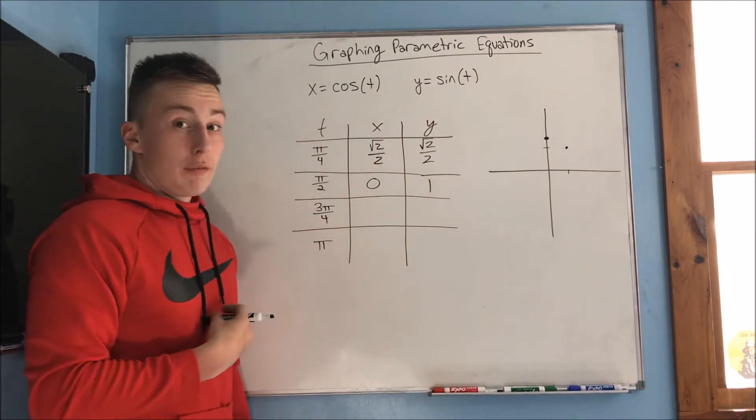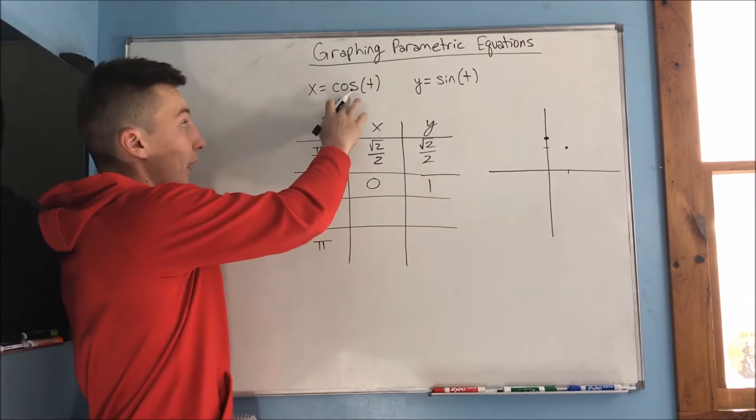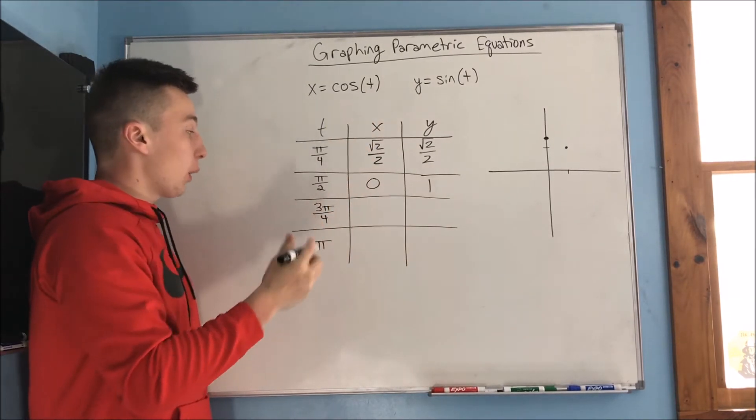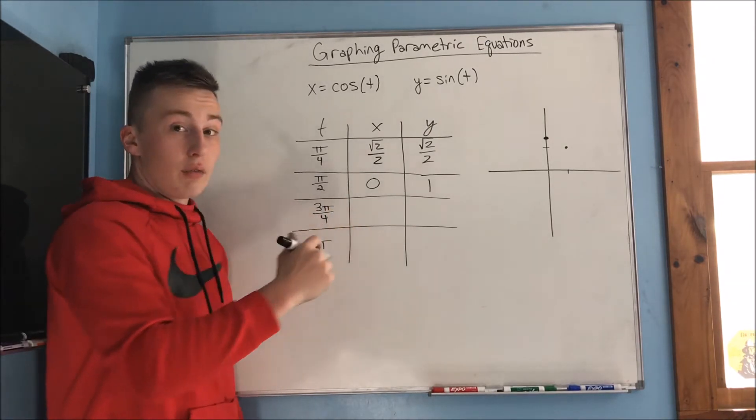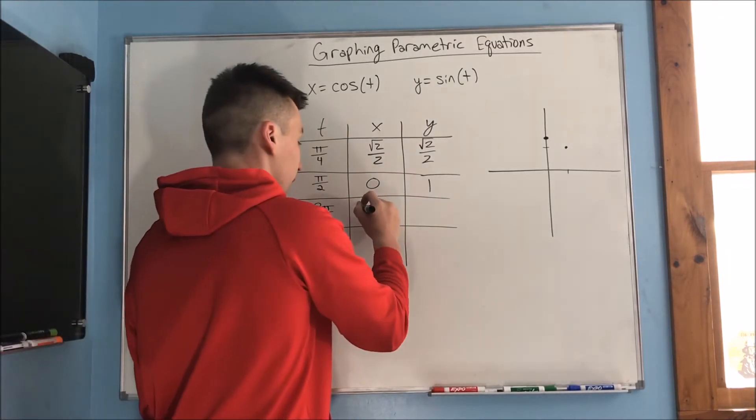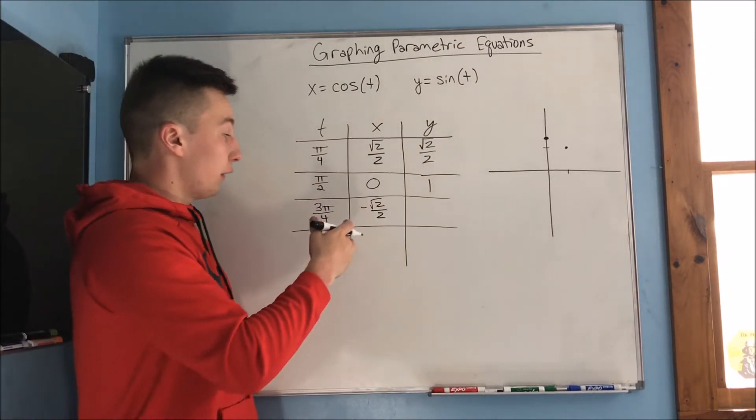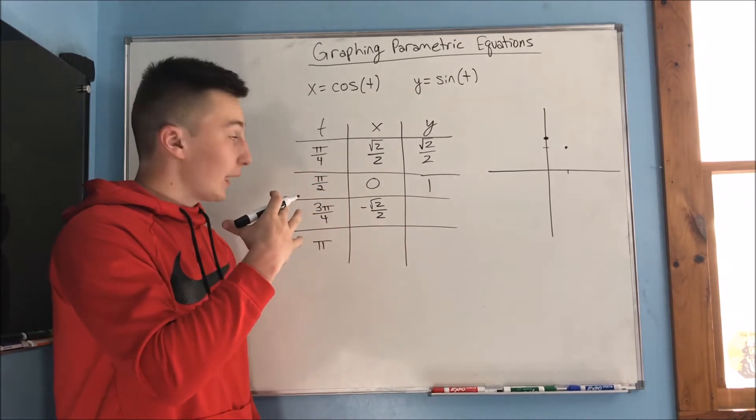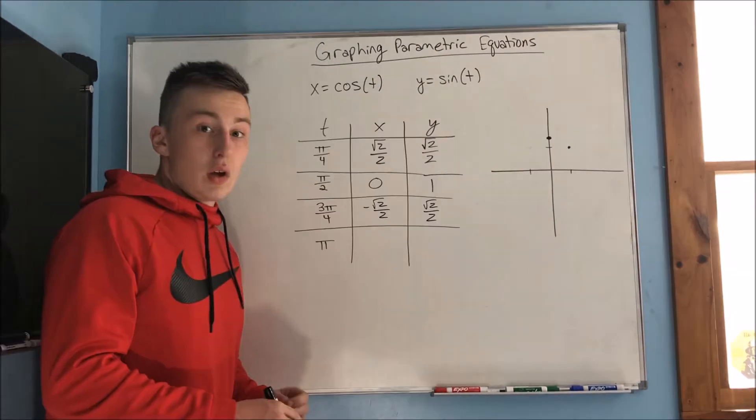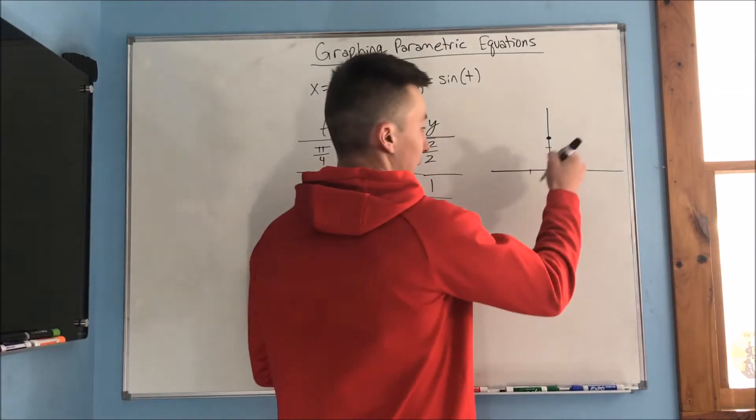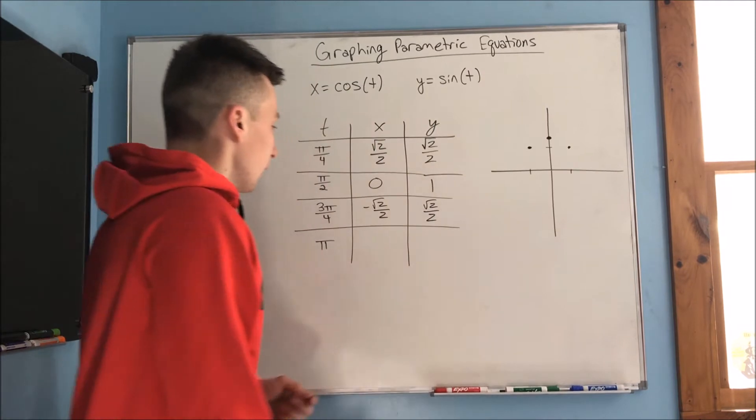Now, what about 3 pi over 4? This is 135 degrees. So when we plug in cosine of 3 pi over 4, that's going to give us a negative rad 2 over 2. And sine of 3 pi over 4, sine is positive in the second quadrant, so you're going to get rad 2 over 2. So if we graph this point, it's going to be right about here.